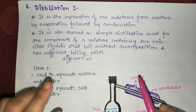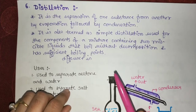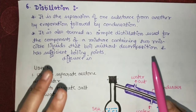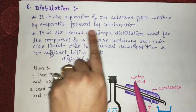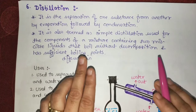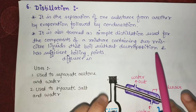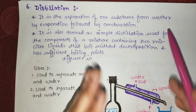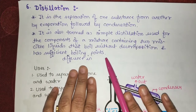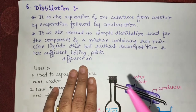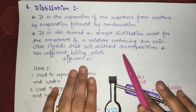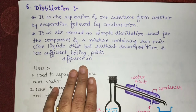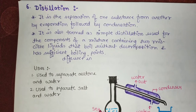Now let us see another technique: distillation. It is a process of separating one substance from another by evaporation followed by condensation. This is also known as simple distillation, used when a mixture contains two miscible liquids that boil without decomposition and have a boiling point difference of more than 25°C. When the difference is less than 25°C, we use fractional distillation instead.